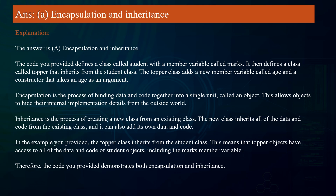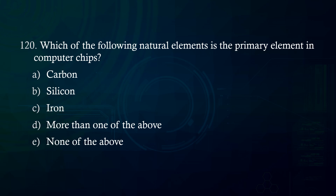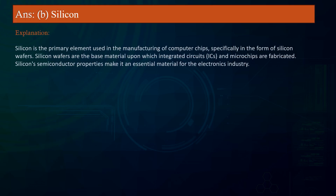Which of the following natural elements is the primary element in computer chips? A. Carbon. B. Silicon. C. Iron. D. More than one of the above. E. None of the above. Answer: Silicon. Explanation: Silicon is the primary element used in manufacturing computer chips, specifically in the form of silicon wafers. Silicon wafers are the base material upon which integrated circuits and microchips are fabricated, and silicon's semiconductor properties make it essential for the electronics industry.